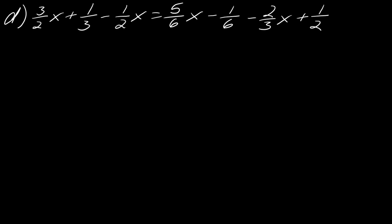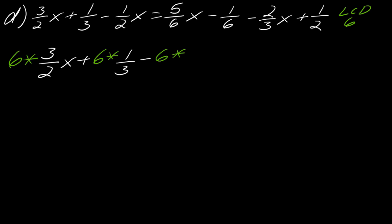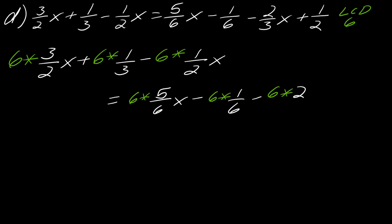For the last one: (3/2)x plus 1/3 minus (1/2)x equals (5/6)x minus 1/6 minus (2/3)x plus 1/2. The LCD in this case is 6, so I'm going to go ahead and set up all of the multiplication.